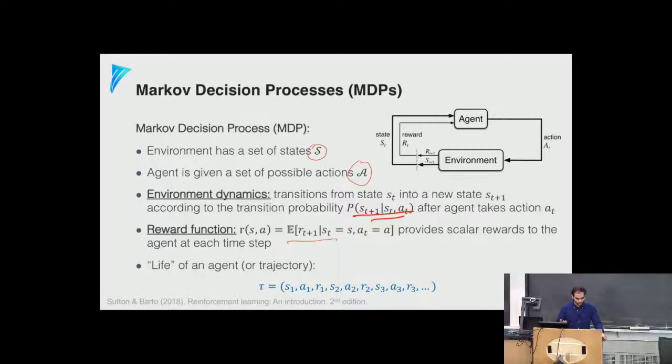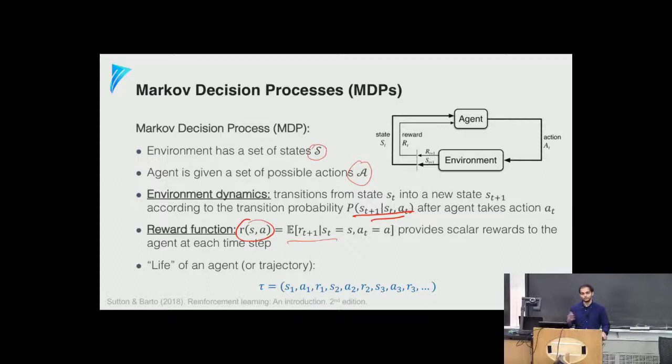The environment is Markovian because the next state depends only on the previous state and action. The environment could also be non-Markovian or partially observed, but we won't go into that. We characterize the agent's life or trajectory simply as the sequence of state, action, and reward tuples over time.